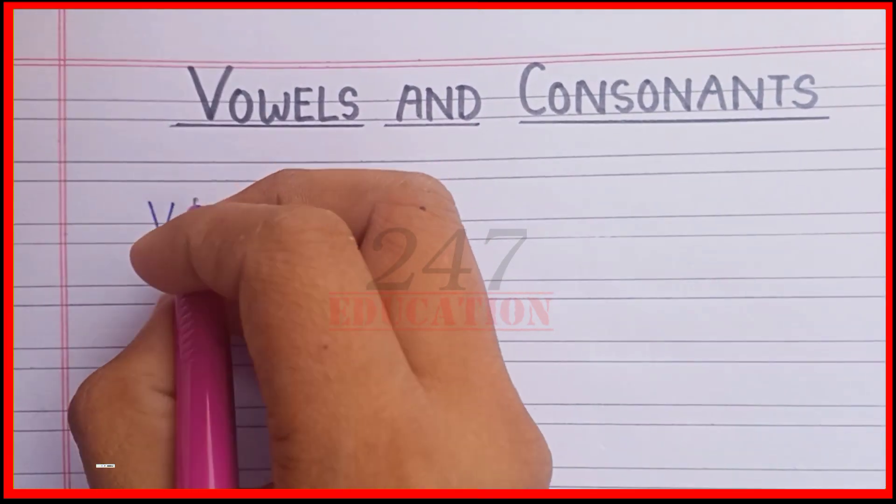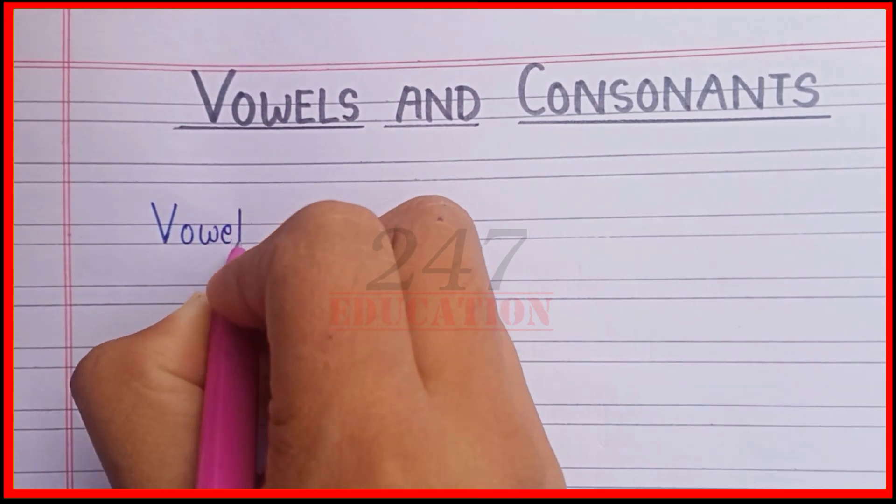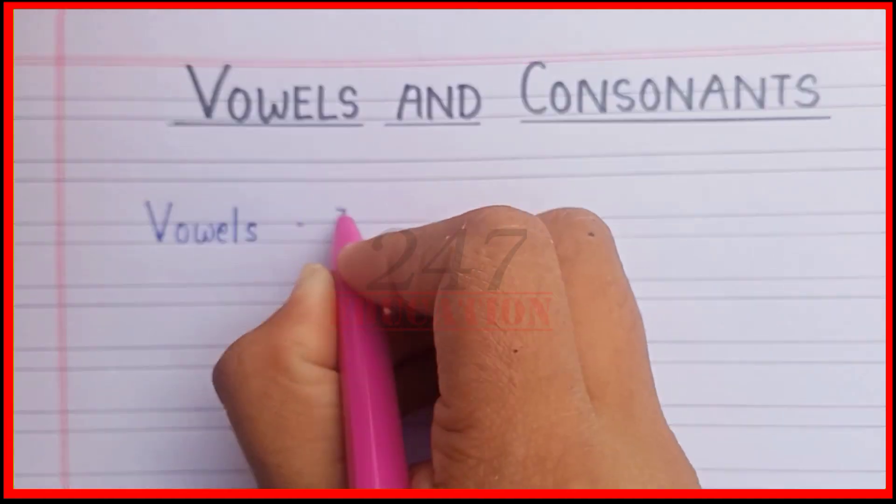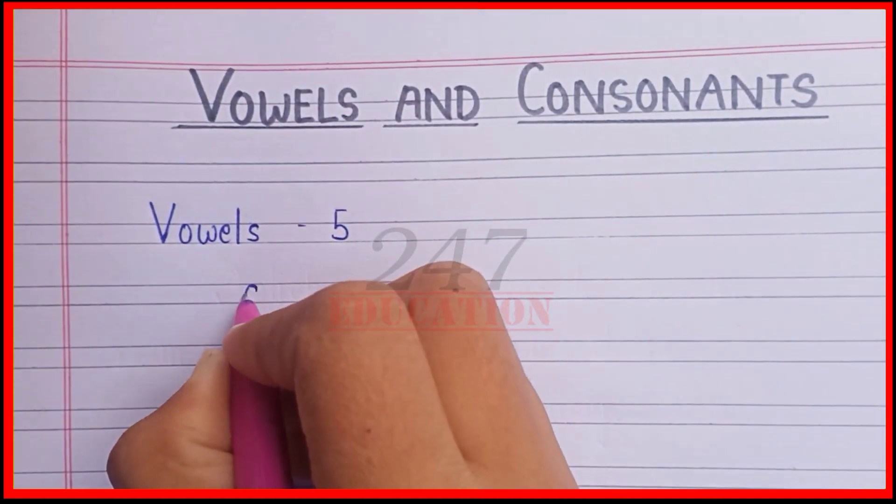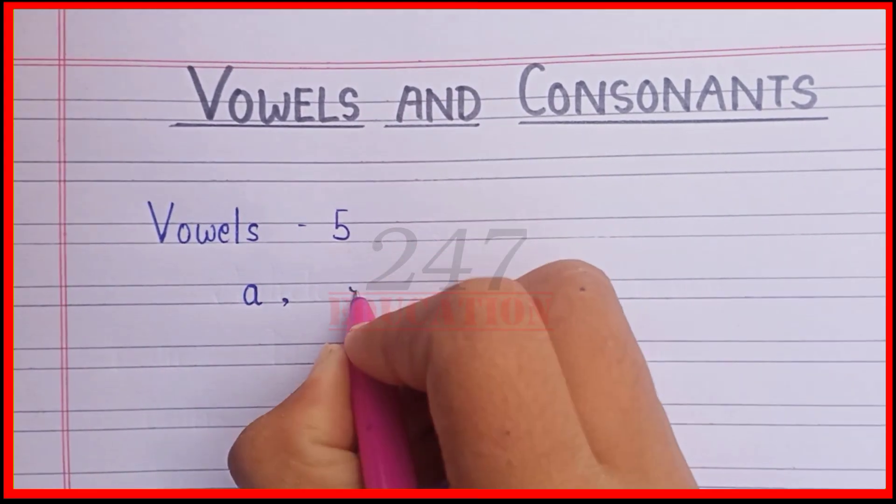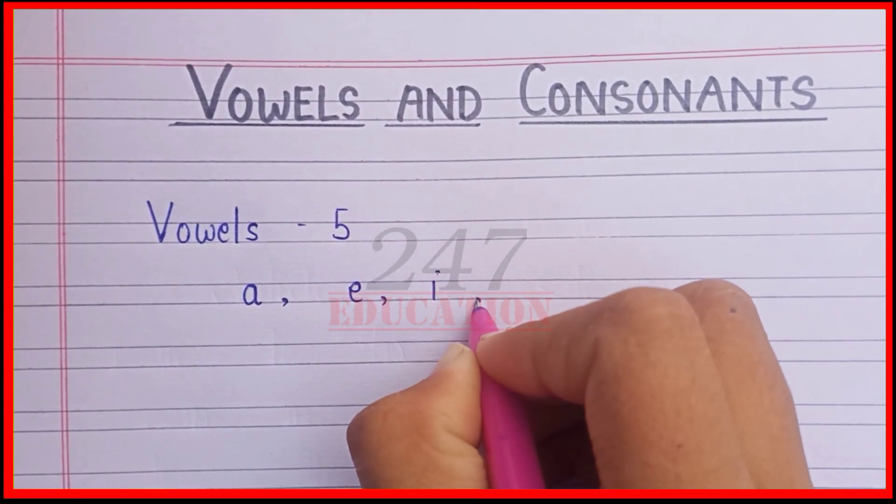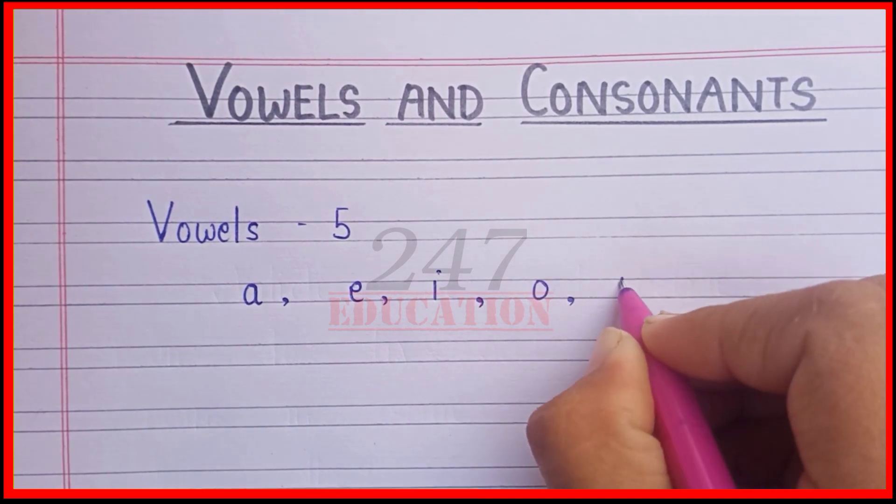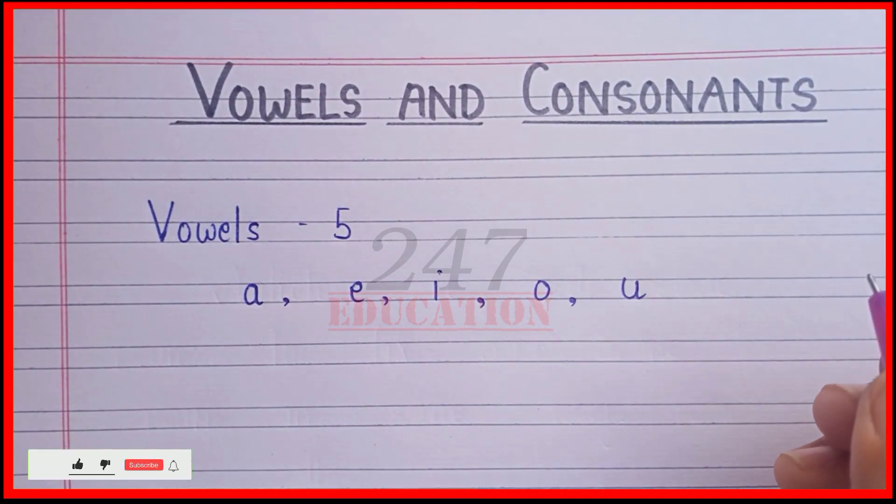I will start with vowels. There are five of them: A, E, I, O, U. A, E, I, O, U.